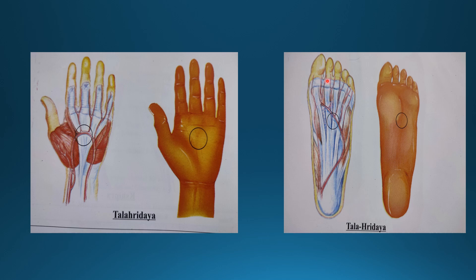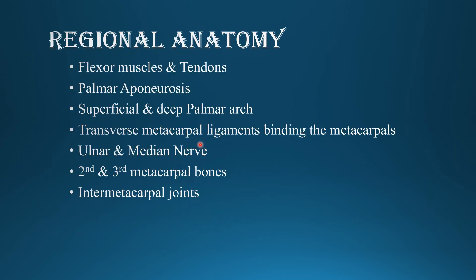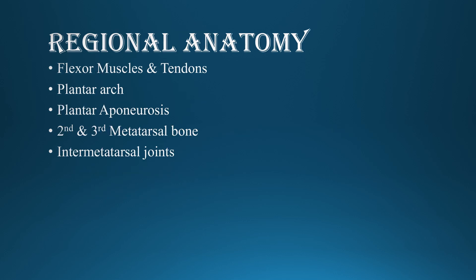Between the second and third metatarsal bone there is the presence of Talavrudaya Marma. Here also it is the second and third metacarpal bone, with inter-metatarsal joints. Regional anatomy: flexor muscles and tendons, palmar aponeurosis, superficial and deep palmar arch, transverse metacarpal ligaments, ulnar and median nerve, second and third metacarpal bones, inter-metacarpal joints. In the lower limb: flexor muscles and tendons, plantar arch, plantar aponeurosis, second and third metatarsal bone, and inter-metatarsal joints.